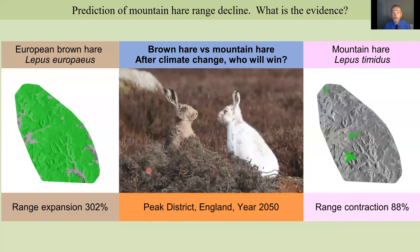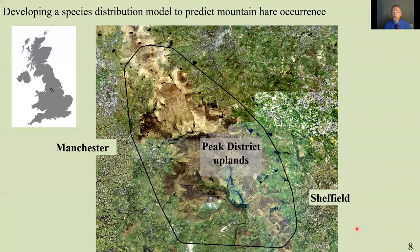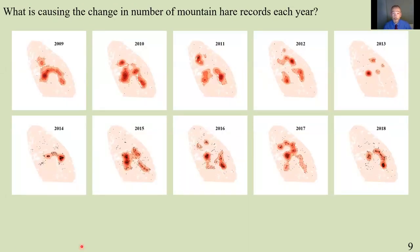Now let's look at another species distribution model that I developed with some friends in Manchester, looking at the mountain hare in the Peak District. How could we develop a map of where mountain hares occur across this large area of 800 square kilometers, where there are only about two or three thousand mountain hares? One approach is to retrieve records from biological record centres such as Derbyshire Wildlife Trust. We accumulated these for several years and plotted where mountain hares were — but the numbers seem to surge and decline. Can we use just one year's data? It's tricky.